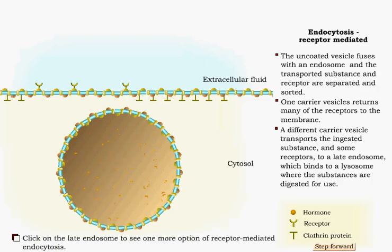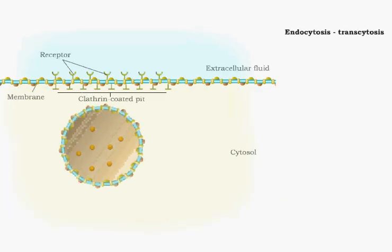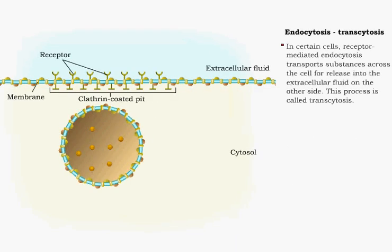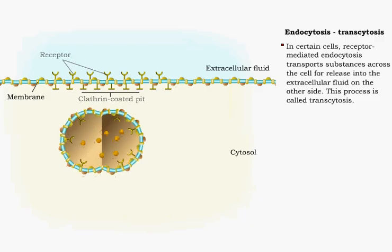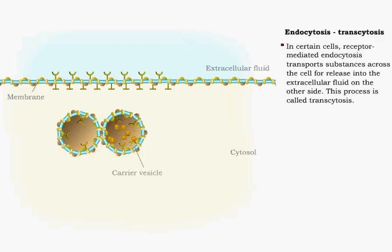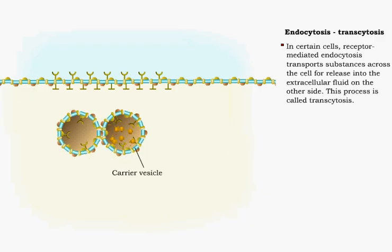Transcytosis is a process common in endothelial cells of blood vessels. In this process, the carrier vesicle transports substances from the blood across the cell, where it releases into the extracellular fluid of the interstitial fluid.